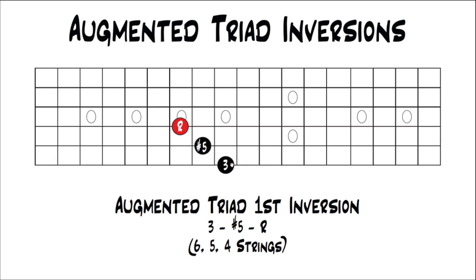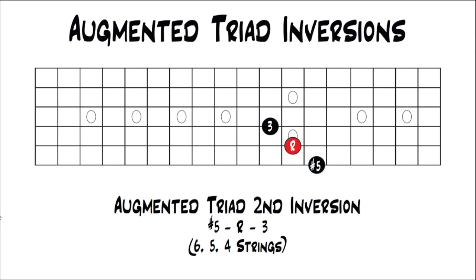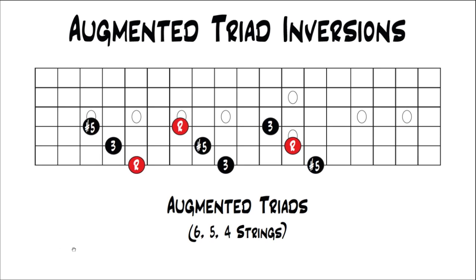So you just do it again — take your lowest note, keep the shape, move it up a major third. The shape is the exact same, but the order of your intervals changes. So now instead of a 3, sharp 5, root, we have a sharp 5, root, 3, and that becomes second inversion. Here are all of those shapes — which is the same shape — on the 6th, 5th, and 4th string.